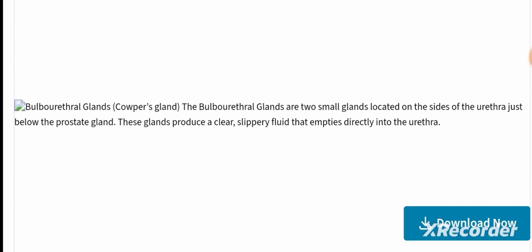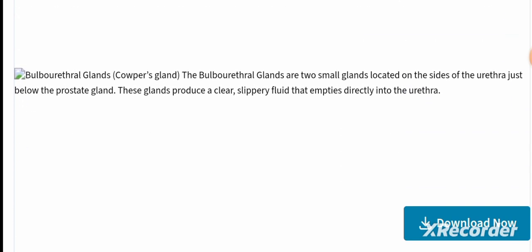The bulbourethral glands, also called Cowper's glands, are two small glands located on the side of the urethra just below the prostate gland. These glands produce a clear, slippery fluid that empties directly into the urethra.